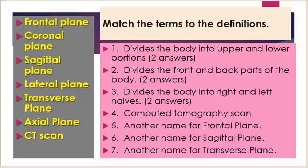Number three: divides the body into right and left halves — two answers again. Number four: computed tomography scan. Number five: another name for frontal plane. Number six: another name for the sagittal plane. Number seven: another name for the transverse plane.